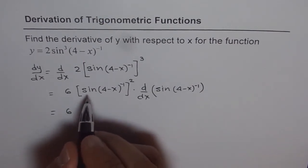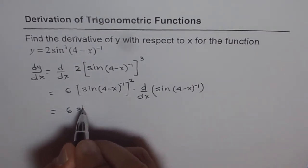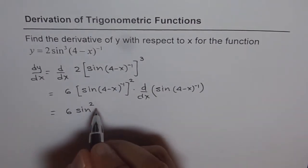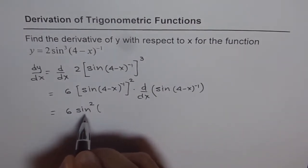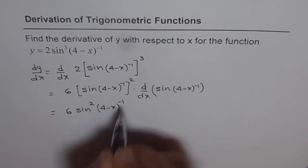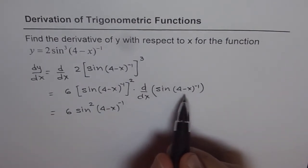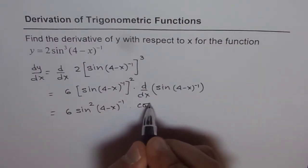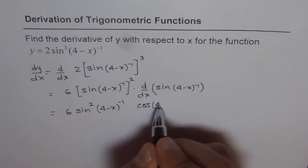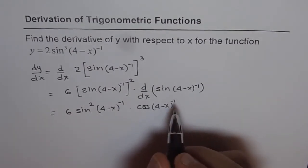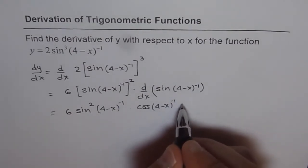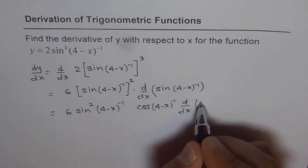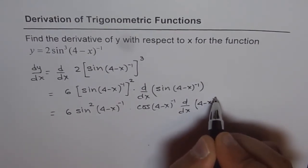Let me write it back as 6 sin squared — sin squared is the correct way of writing it. So we have 6 sin squared of 4 minus x to the power of minus 1. The derivative of the sin function is the cosine function, so we get cos of 4 minus x to the power of minus 1. Then we still need the derivative of the inside function, which is d/dx of 4 minus x to the power of minus 1.